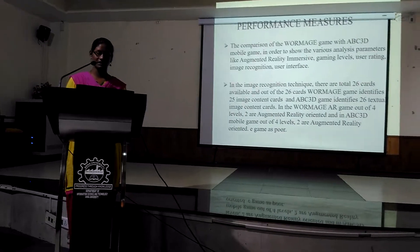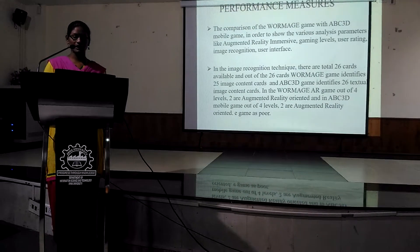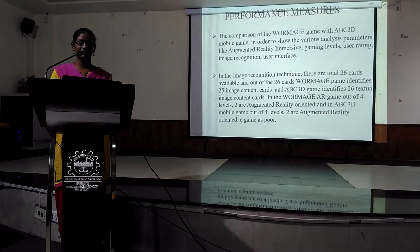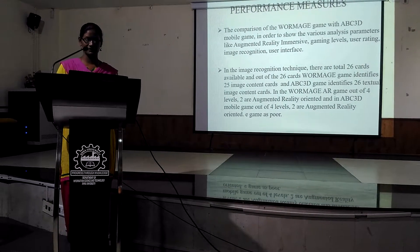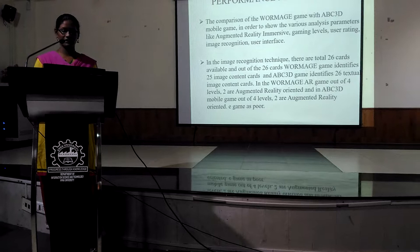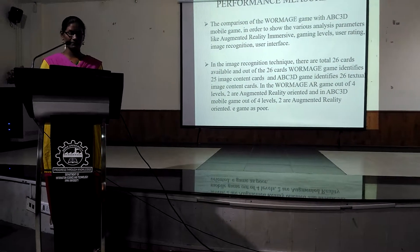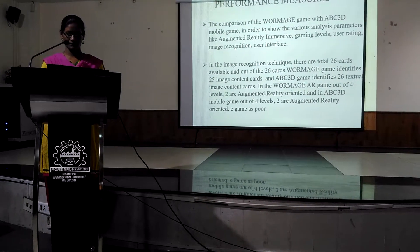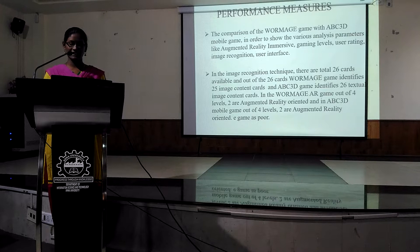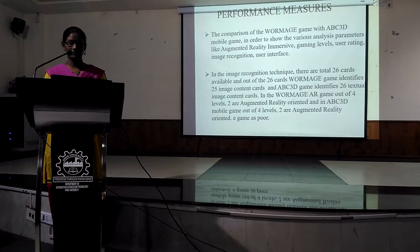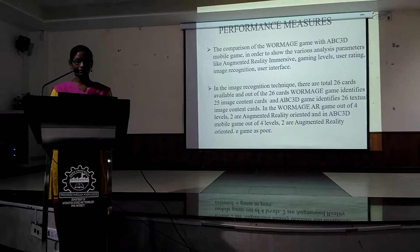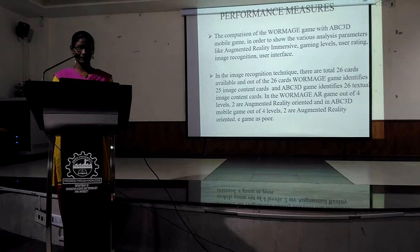Performance measurement is a comparison of the board match game and 3D format game in order to show various analysis parameters like augmented reality, immersive gaming levels, user-ready image recognition, and user interface. In the image recognition techniques, there are a total of 26 cards available out of 4 levels. In the 3D game, it identifies 26 textual image content cards. In the board match, there are 4 levels. In those 4 levels, 2 are augmented reality oriented, and in the ABC 3D format game, out of 4 levels, 2 are augmented reality oriented.